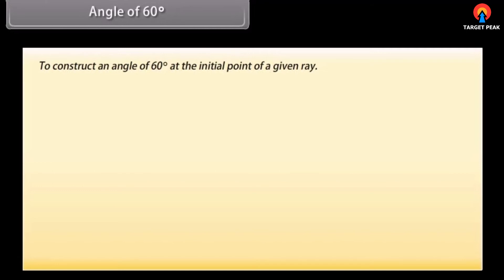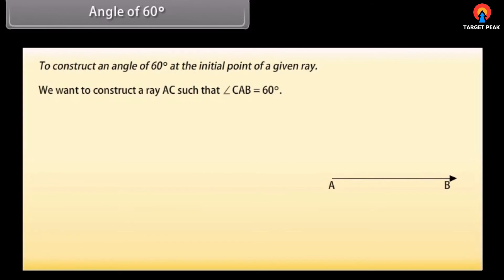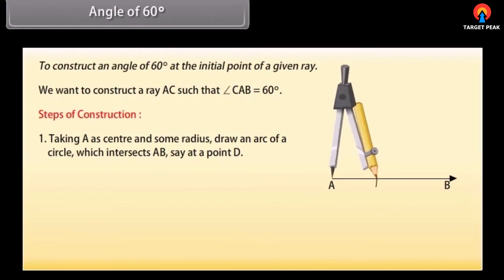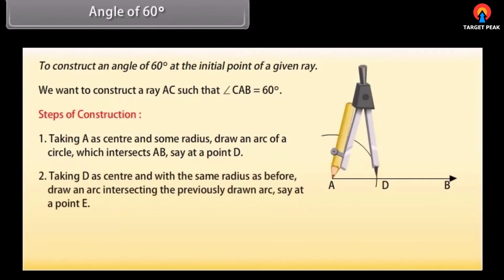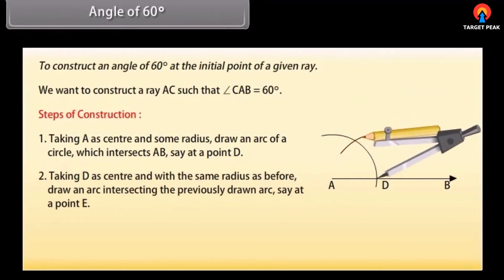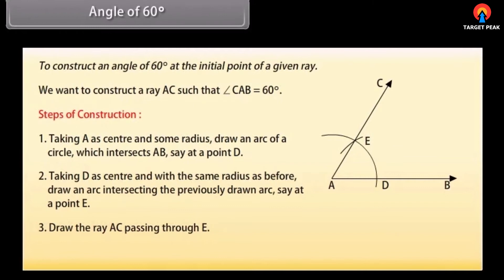Angle of 60 degrees. We know how to construct 30 degree and 45 degree angles. Now we will learn to construct an angle of 60 degrees at the initial point of a given ray. Let us take a ray AB with initial point A. We want to construct a ray AC such that angle CAB equals 60 degrees. Taking A as centre and some radius, draw an arc which intersects AB at point D. Taking D as centre with the same radius, draw an arc intersecting the previously drawn arc at point E. Draw the ray AC passing through E. Then angle CAB is the required angle of 60 degrees.